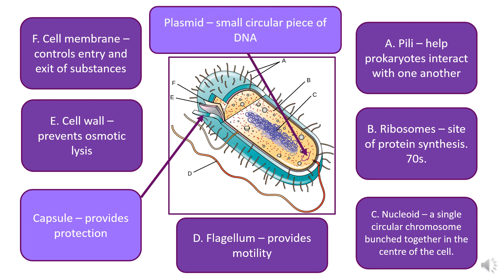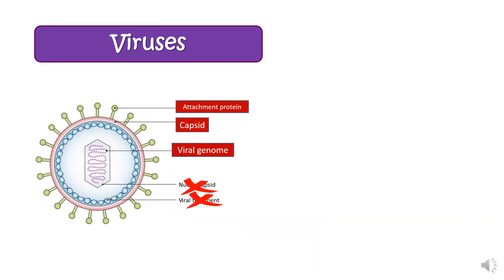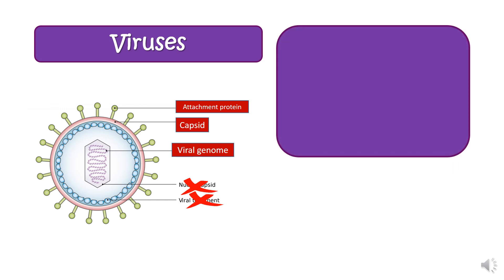We also have plasmids, which are small circular pieces of DNA. The label is pointing to a small circle of DNA within the cell. You'll learn about the roles of plasmids later on; for now you just need to know that they are small circular pieces of DNA. That covers everything you need to know about the composition of a prokaryotic cell.